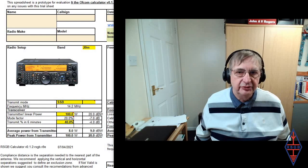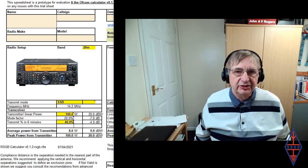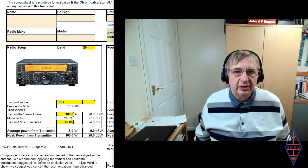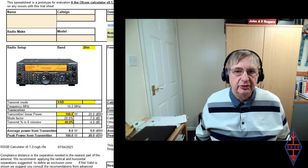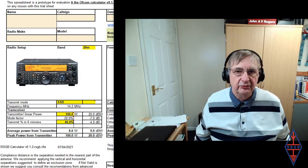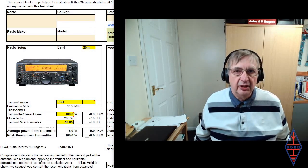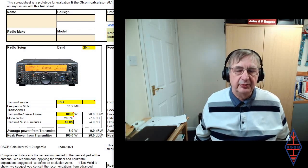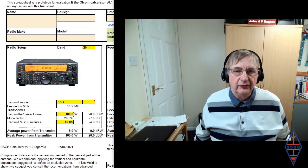I'm going to explain to you today how to use the RSGB Ofcom calculator for assessing your station's EMF. The electromagnetic fields are specified in a new license condition that you must meet the ICNIRP basic requirements. ICNIRP is the International Commission for Non-Ionizing Radiation Protection, and they've published their requirements, the most recent of which is ICNIRP 2020. Ofcom have stated as a license condition that all amateurs need to meet the basic restrictions of the ICNIRP levels.